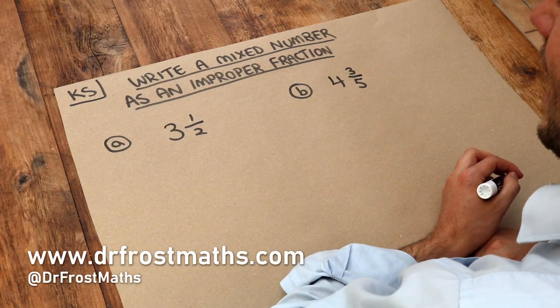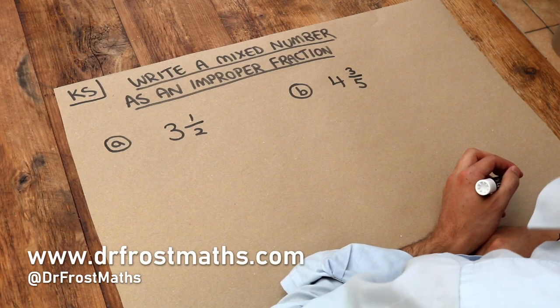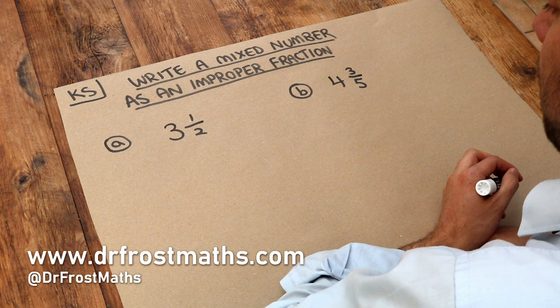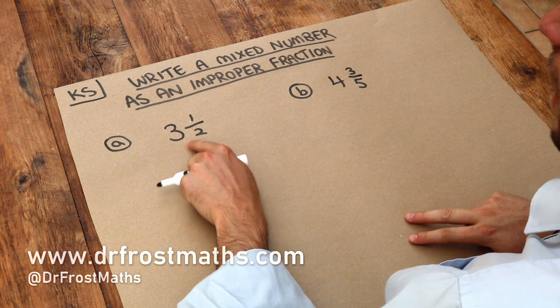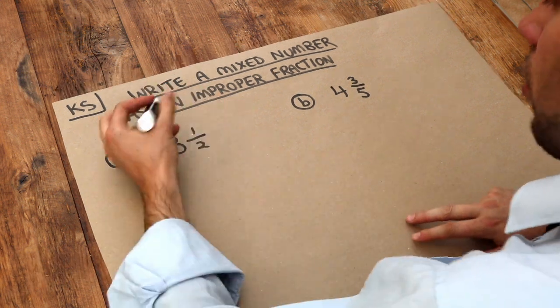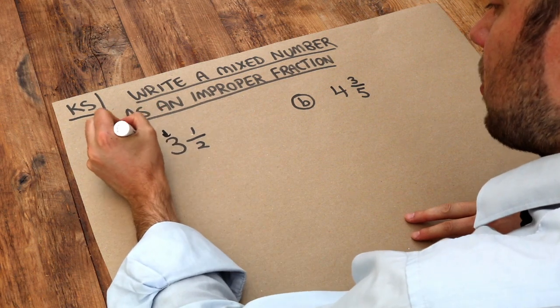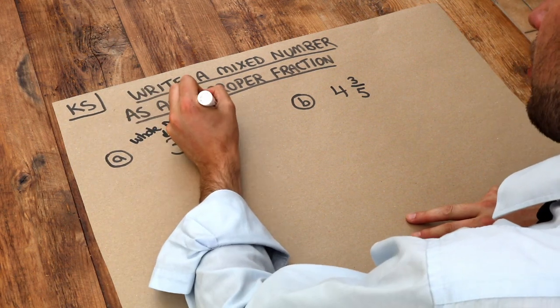Hello and welcome to this Dr. Ross Mass key skill video on writing a mixed number as an improper fraction. Now this is known as a mixed number because we've got a whole part here and we've got a fractional part.